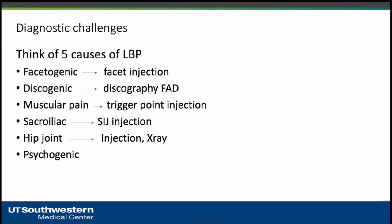When a patient comes with back pain, the first thing we consider is what is behind it. Is it facetogenic pain — pain coming from the facet? We can send the patient for pain management injection. The second cause is discogenic pain; in the past we used discography, but now we only do one discography every two or three years. The third cause is muscle pain, which can be addressed with trigger point injection.